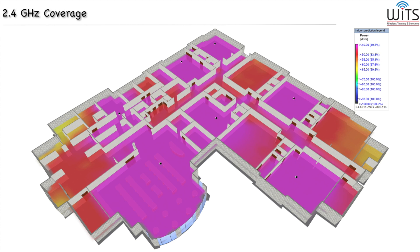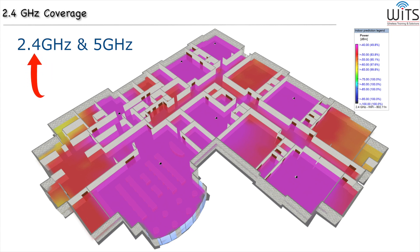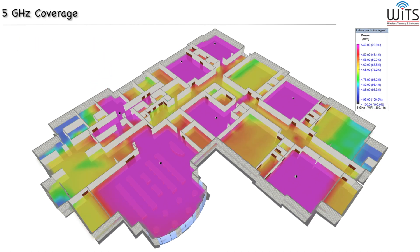Most Wi-Fi access points today have two separate bands of coverage: the 2.4 GHz and the 5 GHz band. The 2.4 GHz was the original one back from the late 1990s, and then the 5 GHz band was given to us in the early 2000s.